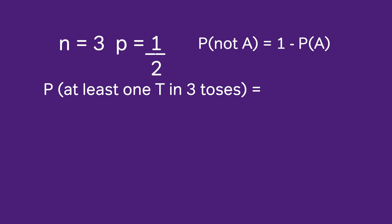So the probability of getting at least one tail in three tosses. What would it mean to get not at least one tail? Well, that would mean you're getting all heads, so that would be the probability of three heads. The probability of three heads is the probability of a head and another head and another head.